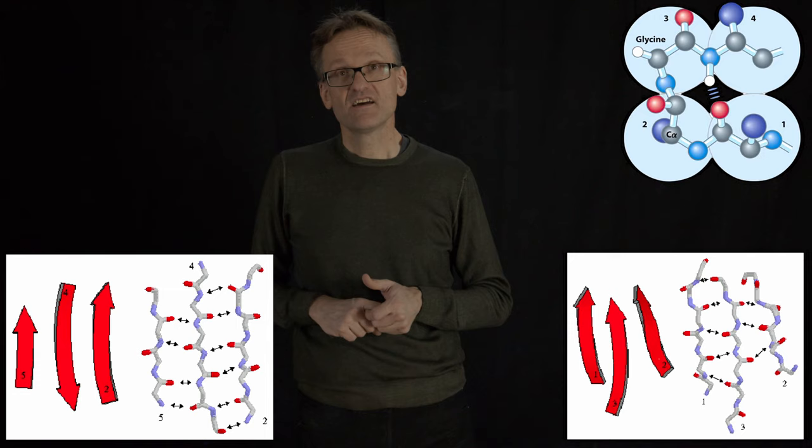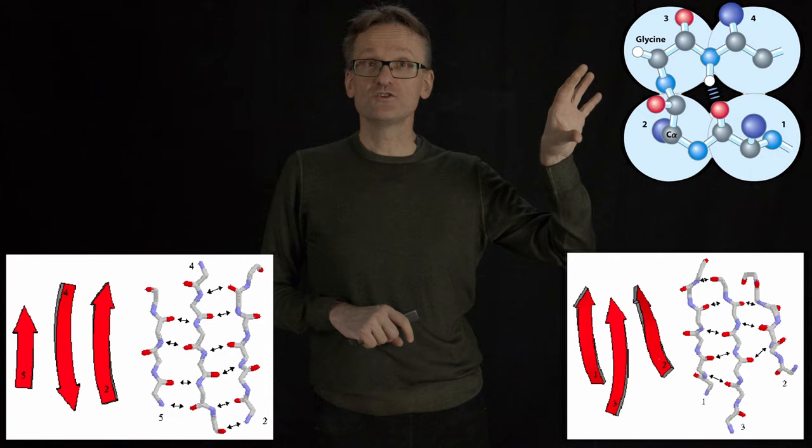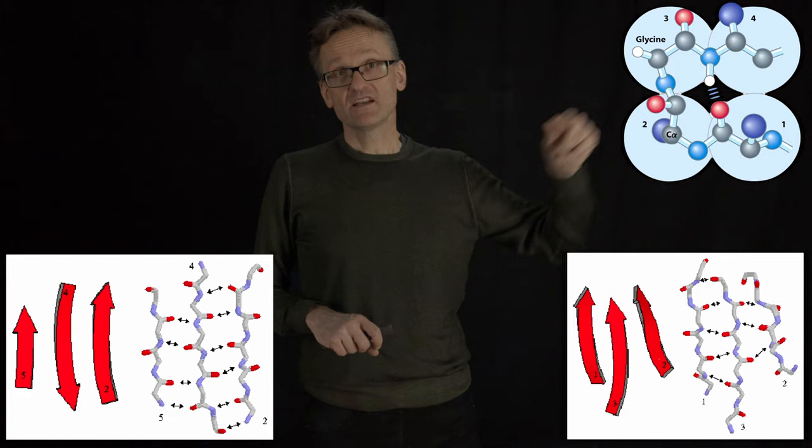So at the end of a beta strand, it's not just some sort of random quick turn, but it's usually a very well-defined structure with glycines and a hydrogen bond in the middle that really terminates the end of the helix.